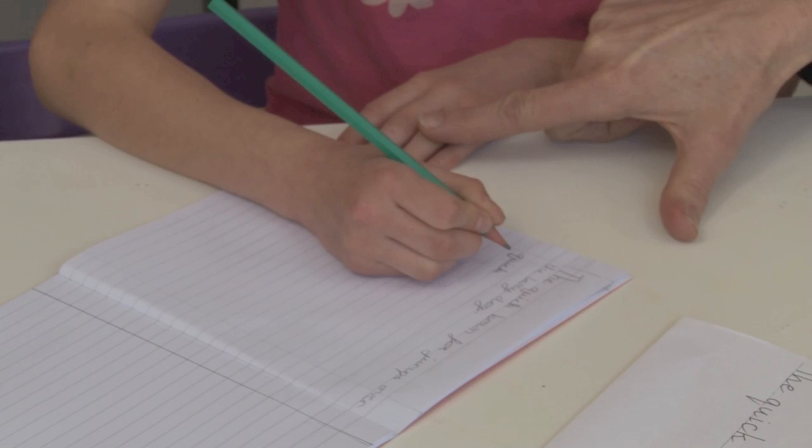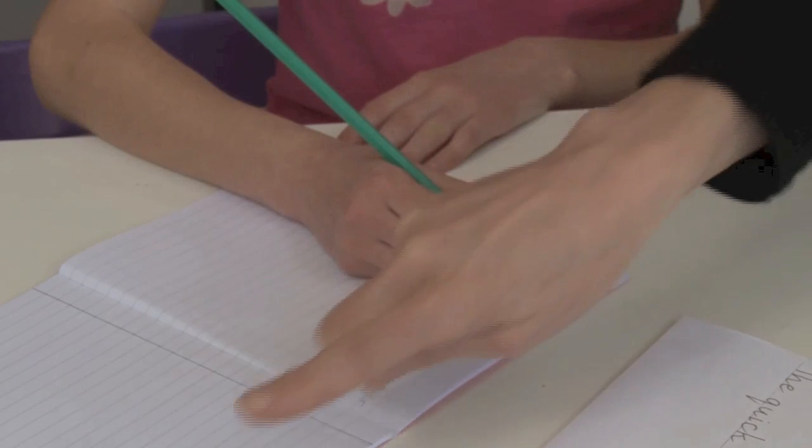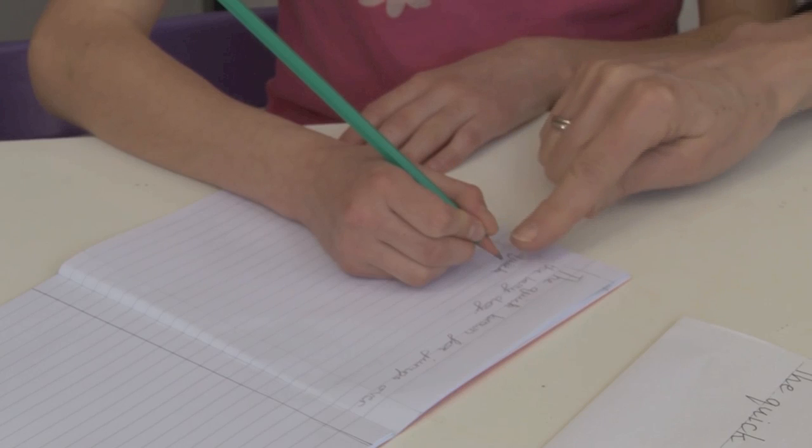You've got your hand on the paper keeping it still, and you've got it angling uphill, which means you can see what your pencil point's doing when you're writing.